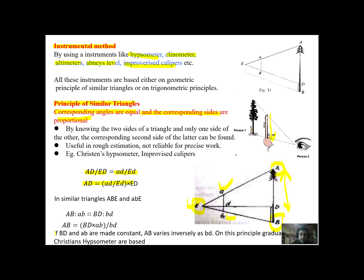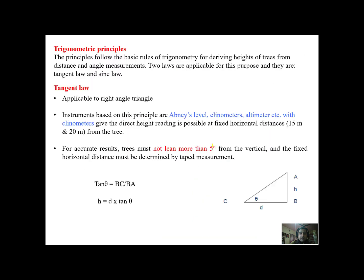Now care has to be taken if BD and ab are made constant, AB varies inversely as bd. This forms the basis of principle graduations in Christen's hypsometer. This instrument will be shown to you and demonstrated to you in practical exercises. This is the way these instruments are based on.